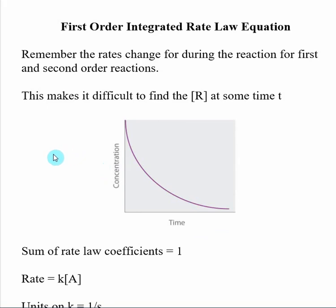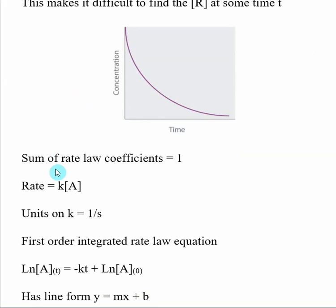That's always the first question. When I look at one of these questions, the first thing I ask is, is my reaction first or second order? And remember, you can't get that information from the balanced reaction itself, you have to get it by some other means. So when we look at this, when we say first order, remember, we're saying that the sum of all the rate law coefficients in our rate law expression are equal to one.